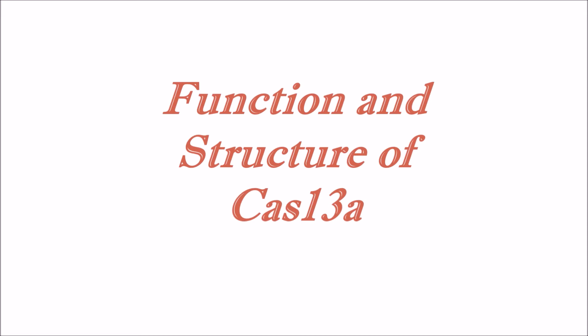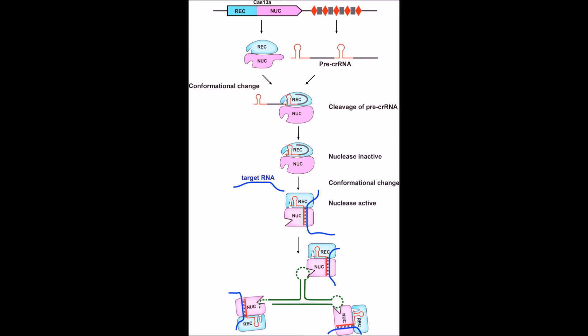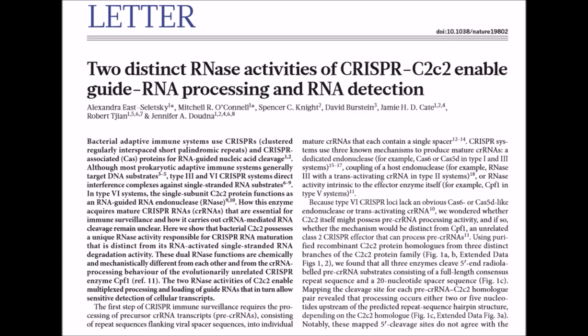Despite their similarities, the mechanism of Cas13a is quite different than Cas9, as shown by this diagram. Cas13a cleaves not double-stranded DNA, but single-stranded RNA, and uses a single CRISPR-RNA as its guide. This process begins with co-expression of Cas13a and what is known as the pre-CRISPR RNA. The pre-CRISPR RNA is able to bind to the CRISPR RNA recognition lobe of Cas13a, where it is cleaved to become the mature CRISPR RNA. Interestingly, this RNase activity of Cas13a is entirely independent from its other RNase activity, meaning Cas13a is equipped to both process its own CRISPR RNA and cleave RNA once it binds its target RNA.